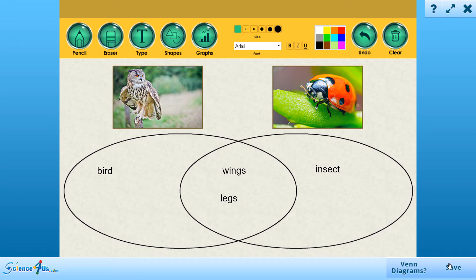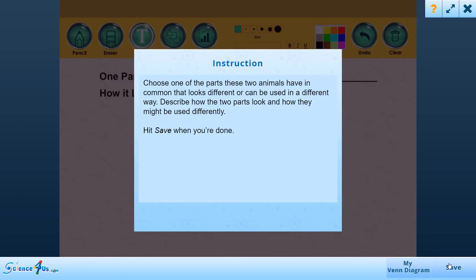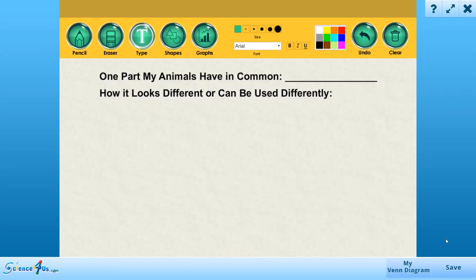Okay, let's take it one step further. Choose one of the parts these two animals have in common that looks different or can be used in a different way. Describe how the two parts look and how they might be used differently. Hit save when you're done. As a parent, I really appreciate the explore activities because they give my child an opportunity to explore the topic by asking questions and making their own connections.